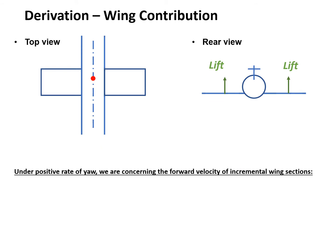How the wing can contribute to the rolling moment — let's focus at the top view. It's a simplified view, and the red dot is the center of gravity. We have a positive yawing rate R. The left wing will be forward moving, and the actual velocity will be V minus R times Y. Similarly, the right wing will be backward moving, and the velocity will be slightly smaller, following the same relation V minus R times Y.